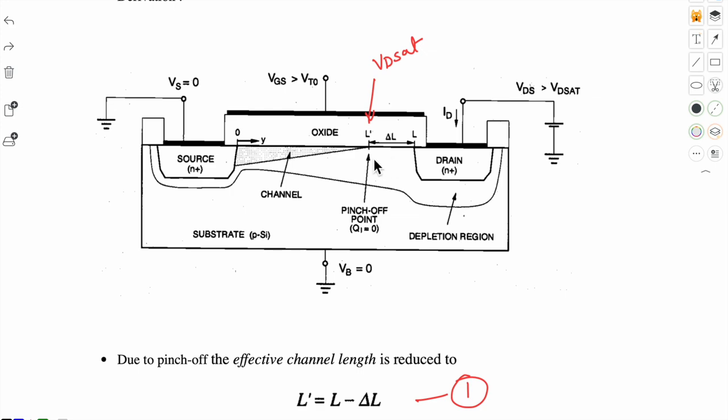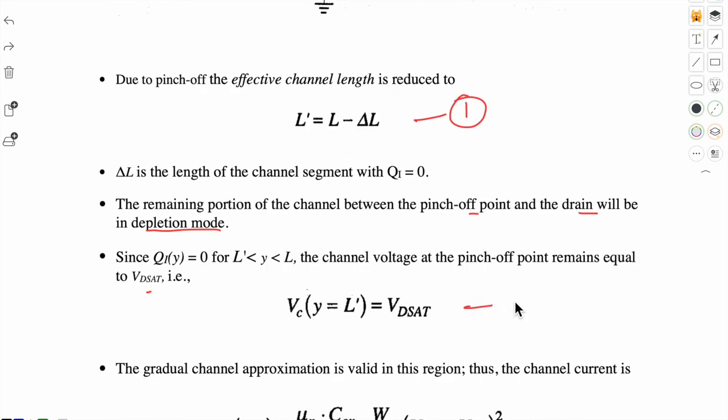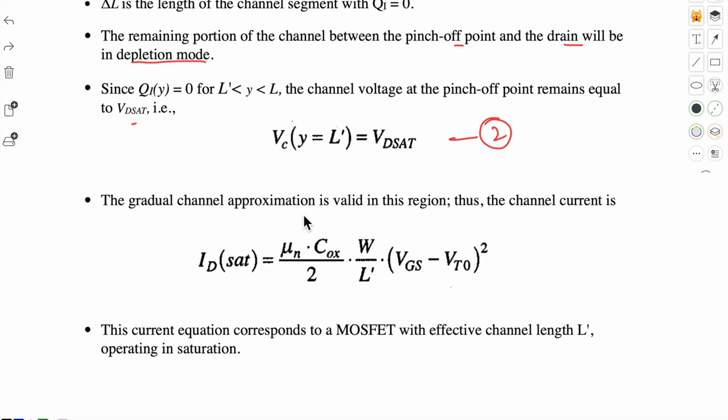So the remaining voltage, which is excess voltage drop, is in this region. So the channel current is given by equation 3.